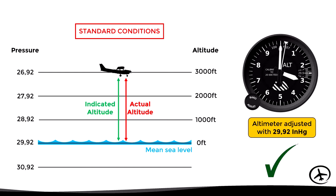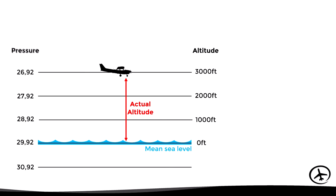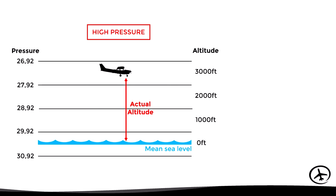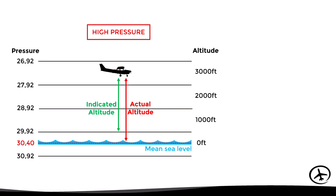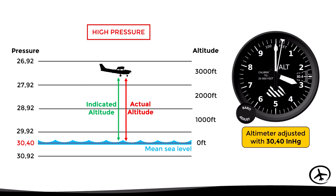In reality, we almost never have standard pressure conditions, so the 29.92 isobar almost never identifies the mean sea level. In a higher than standard pressure case, the isobars move upwards, so the new pressure level identifying the mean sea level becomes, for example, 30.40 inches of mercury. If the altimeter is still set to 29.92, the indicated altitude will be lower than the actual altitude. The solution is to readjust the altimeter to use 30.40 as the new barometric reference.